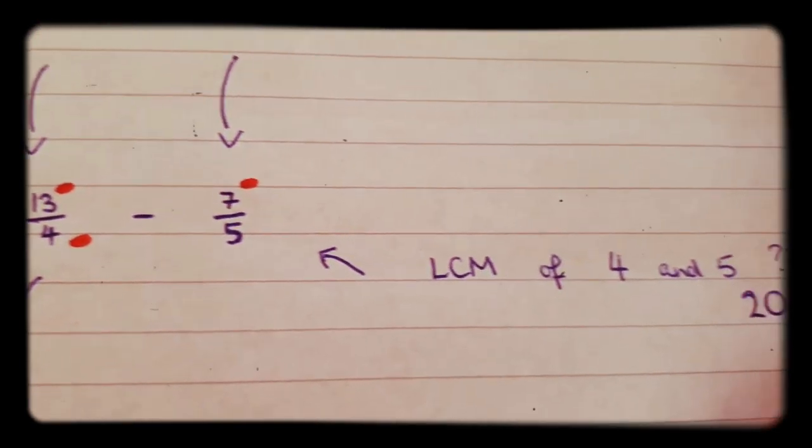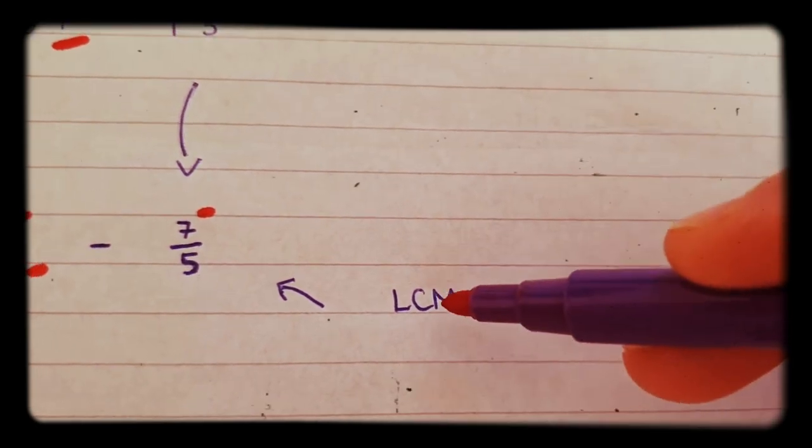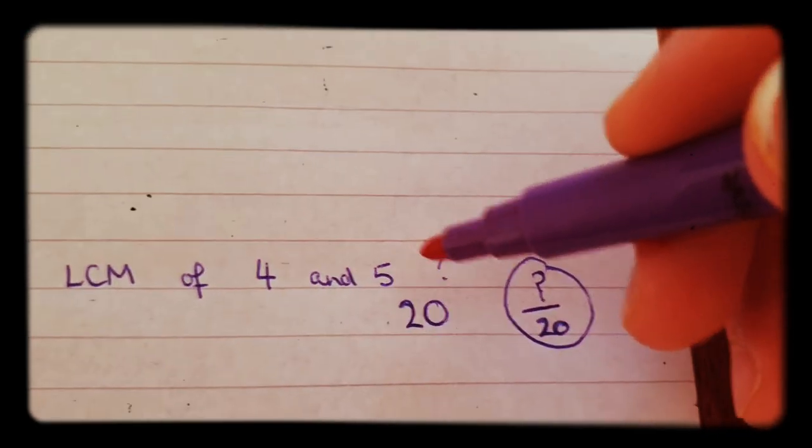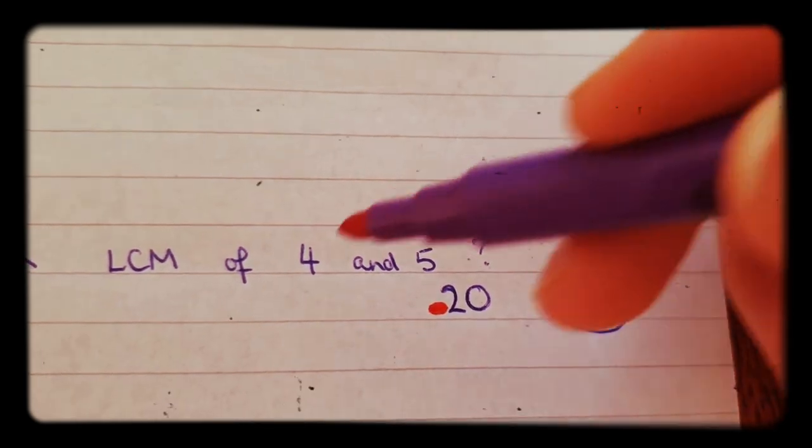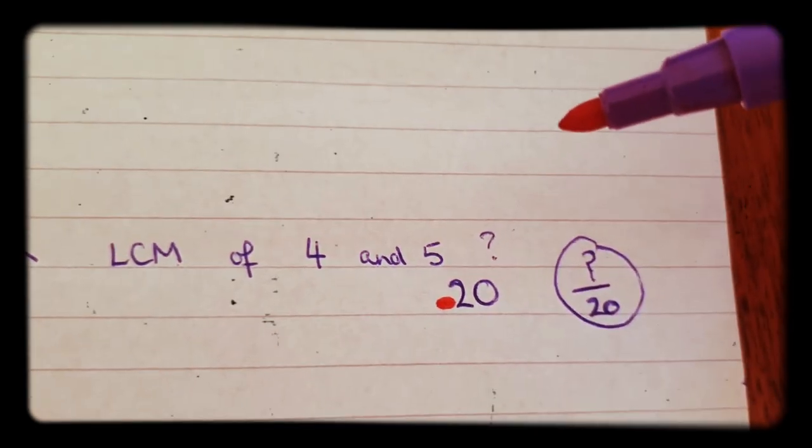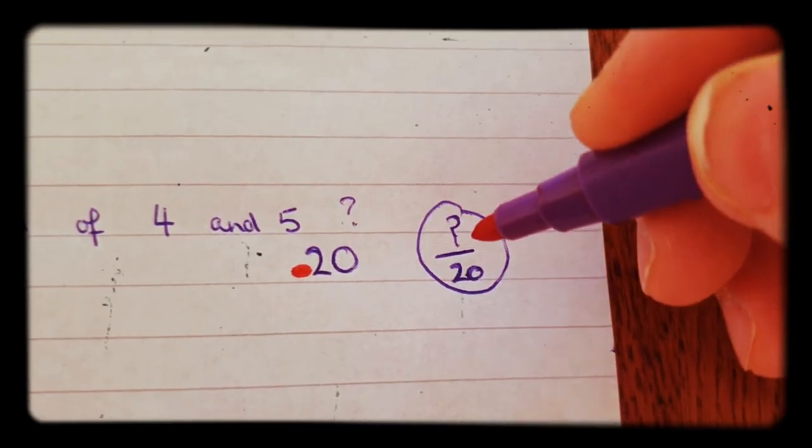To do that, we need to find the lowest common multiple of four and five, which is 20. Four and five both go into 20. So we need to turn them into fractions with 20 as the denominator.